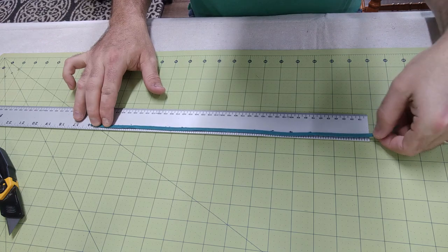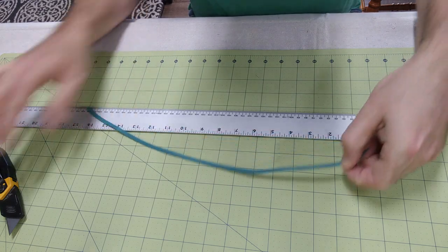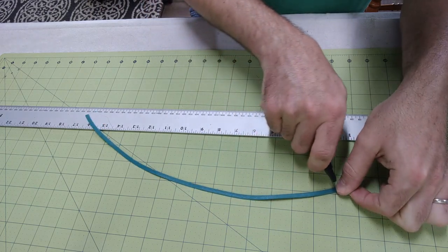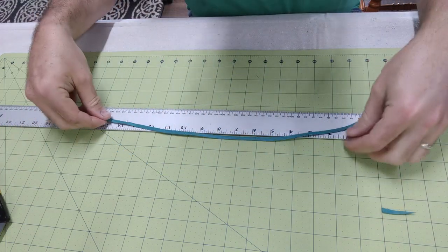To prepare my lace for buck stitching I have a piece of scrap quarter inch lace. I'm going to measure out sixteen inches and cut off the end.